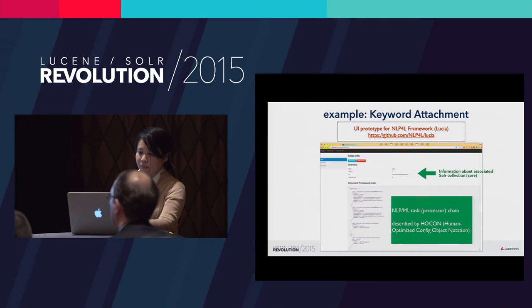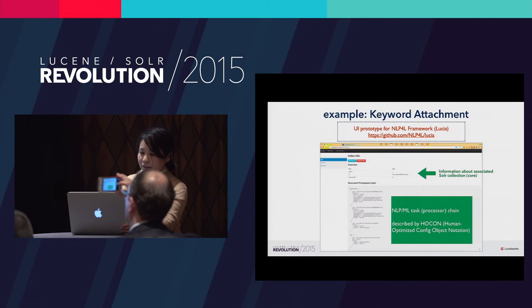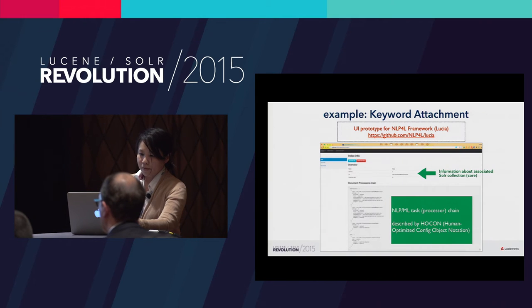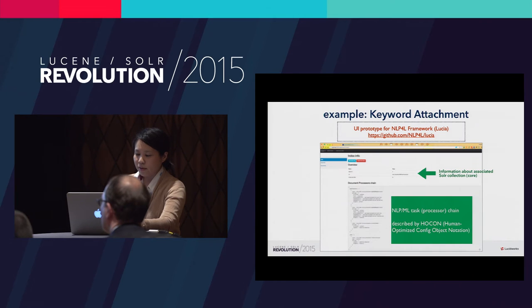Here is the GUI prototype now under development for the NLP4L framework. We named this Lucia. I'll show the steps for keyword attachment. Keyword attachment is a technique to attach additional information to Solr documents. First, register the Solr collection schema information such as URL, unique key field name, and so on. Also, the NLP4L prediction task chain should be registered to extract keywords. The chain settings are described in HOCON format, a JSON extension widely used by Java and Scala developers.